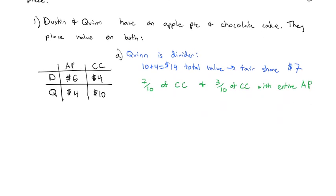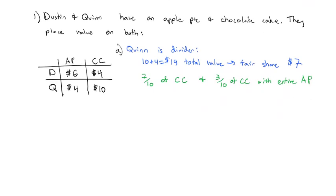Well, in that case, Dustin's going to look at the two piles. But Dustin puts different values on them. Dustin says, OK, seven-tenths of the chocolate cake. The chocolate cake, Dustin only values at $4, so that would be 28 over 10. Dustin thinks the chocolate cake is only worth $2.80. Or Dustin could take three-tenths of the chocolate cake, which is $4, and the entire apple pie, which Dustin values at $6. That's going to be 12 tenths, or 1 plus 2, or 1.2, plus 6 is 7.20, is the value of the second option.